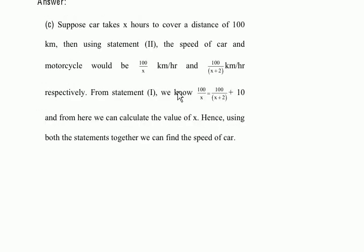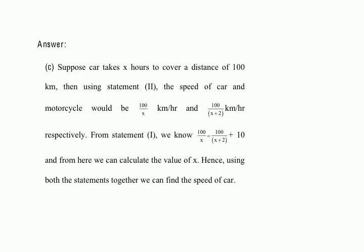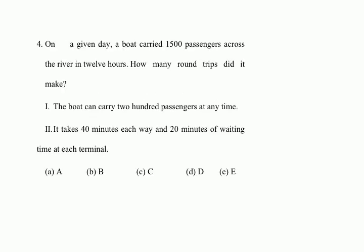Looking at the official explanation, it is similar to what we have done — they equated the speed instead of the time, but either way you get the same answer. The next question looks like an easy one. On a given day, a boat carries 1500 passengers across the river in 12 hours. How many round trips did the boat make?